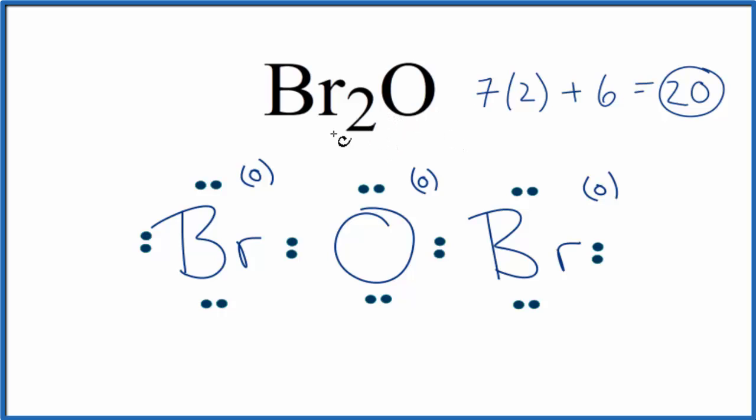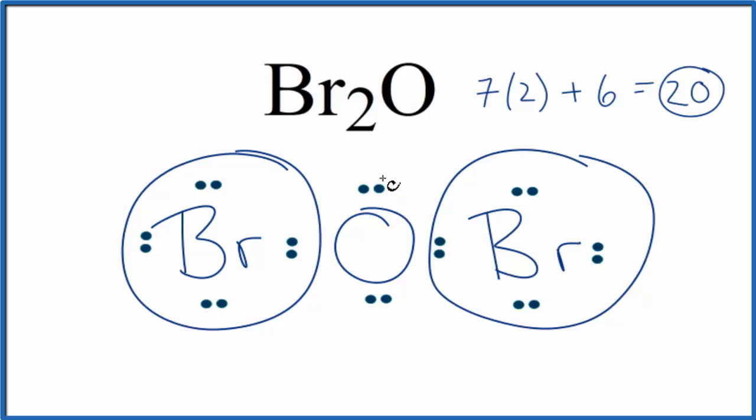If we wanted to look at the molecular geometry, we see we have 4 things attached to this oxygen here. So we have a bromine here and a bromine here. There's 2 atoms and then 2 lone pairs. So 4 total things. Let's look that up.